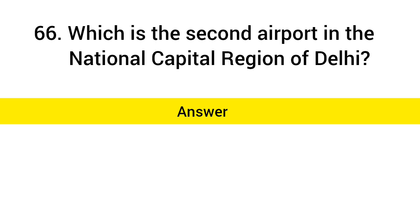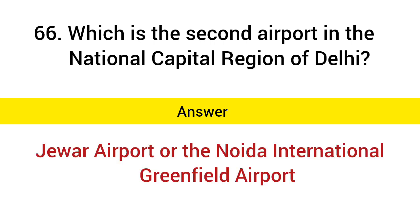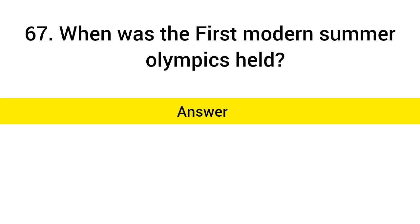Which is the second airport in the National Capital Region of Delhi? Answer: Jewar Airport, or the Noida International Greenfield Airport. When was the first modern Summer Olympics held? Answer: 1896.